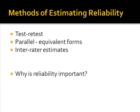So how do we go about estimating reliability? We can measure something twice, called test-retest reliability. We can measure something using two different methods, called parallel or equivalent forms. We can ask two different raters to measure something, called inter-rater reliability. Other methods of estimating reliability exist as well.